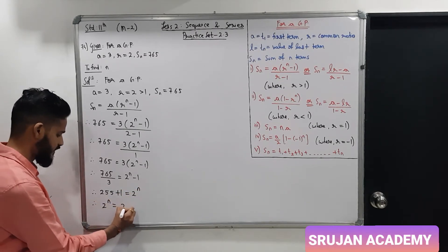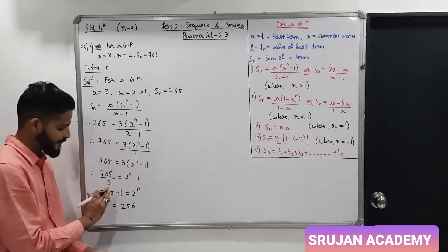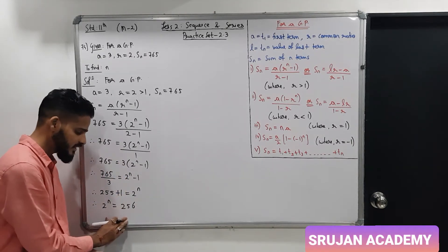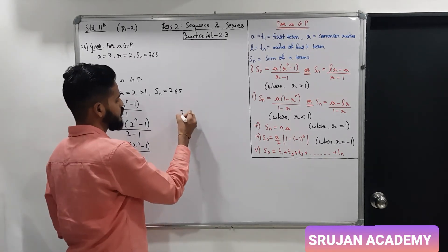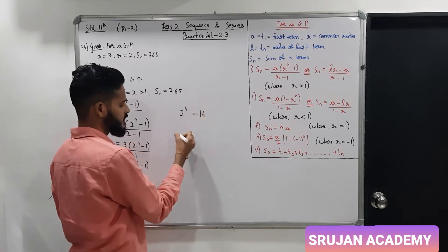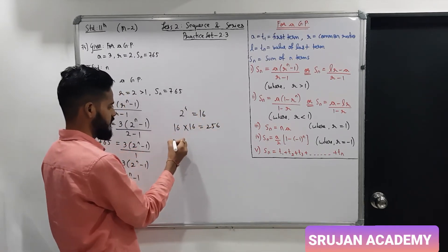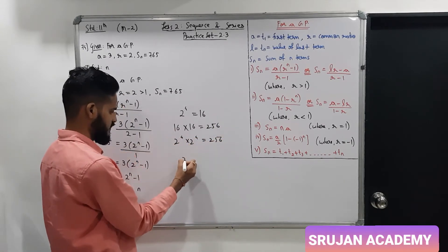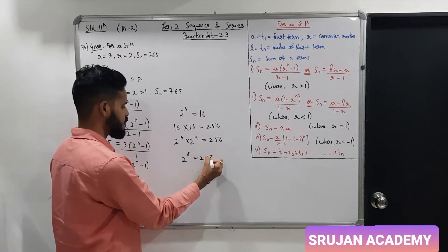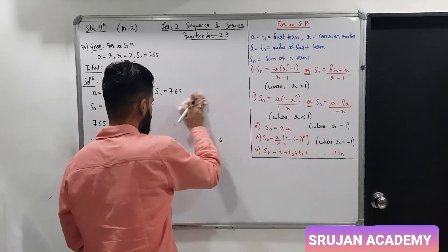This means 2 raise to n is 256. Left side is 2 raise to n. Right side is 256. Now I need to see what power of 2 is 256. 2 raise to 4 is 16. And 16 into 16 is 256. 2 raise to 4 into 2 raise to 4 is 256. 2 raise to 8 is 256.